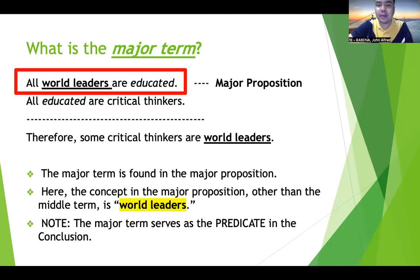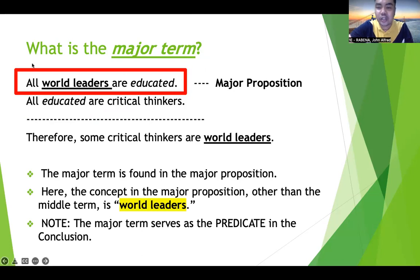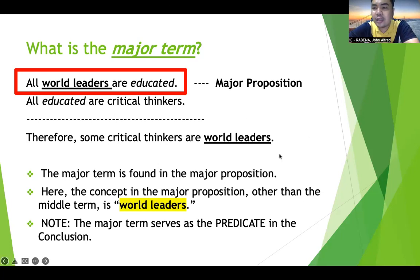What is the major term? The major term is found in the major proposition. The major proposition is 'all world leaders are educated.' The concept in the major proposition other than the middle term is world leaders, so the major term is world leaders. Take note that the major term always serves as the predicate in the conclusion. In our conclusion, 'therefore some critical thinkers are world leaders,' world leaders is taken as the predicate because it is the major term.